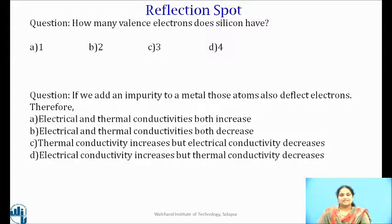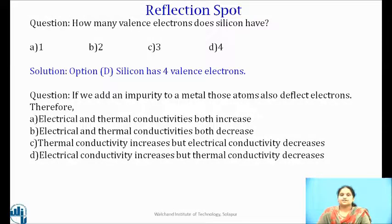Students, now please pause the video, think for a while and try to answer these questions. Check for the answers. Yes, silicon has 4 electrons in its outermost orbit. Therefore, option D is correct for the first question.